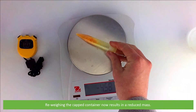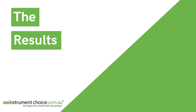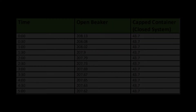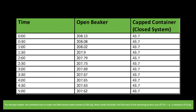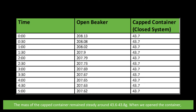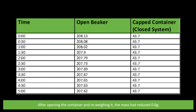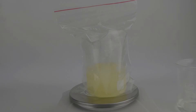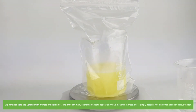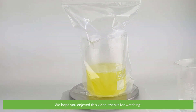Reweighing the capped container now results in a reduced mass. For the open beaker, the combined mass of water and the effervescent tablet started at 208.13 grams. When wholly dissolved, the final mass of the remaining product was 207.62 grams — a reduction of 0.51 grams. The mass of the capped container remained steady at around 43.6 to 43.8 grams. After opening the container and re-weighing it, the mass had reduced by 0.6 grams. We conclude that the conservation of mass principle holds, and although many chemical reactions appear to involve a change in mass, this is simply because not all matter has been accounted for. We hope that you enjoyed this video. Thanks for watching!